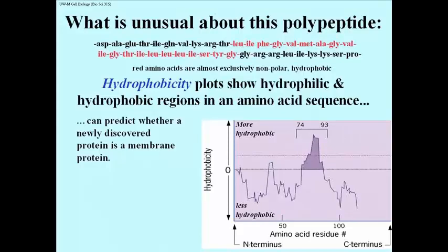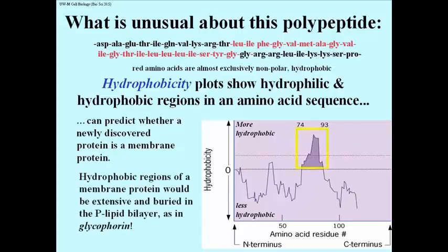Approximately 18 to 20 or 21 hydrophobic amino acids will form a helix whose dimensions would be just about right to span a typical plasma membrane, a typical phospholipid bilayer. So we can predict what regions of a polypeptide might span a bilayer by doing a hydropathy plot.